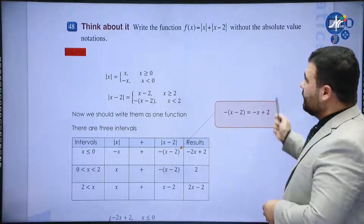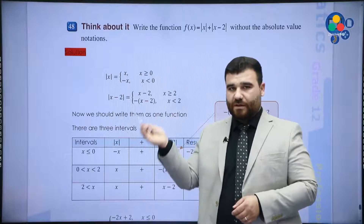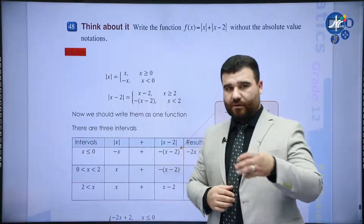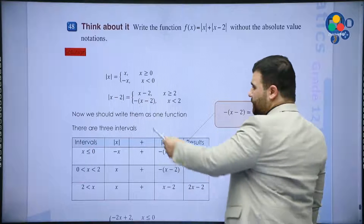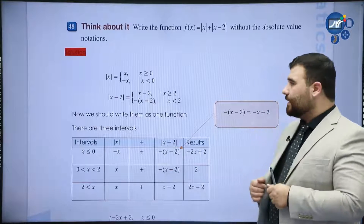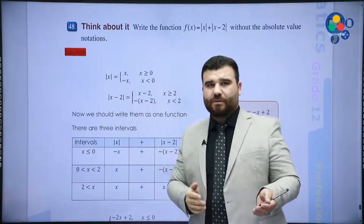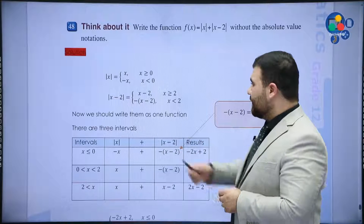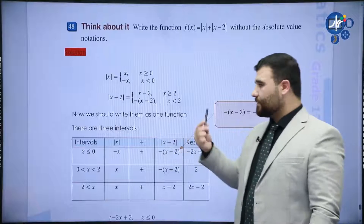Going back: instead of |x|, I write x when x ≥ 0 and -x when x < 0. For |x - 2|, the expression x - 2 equals itself without absolute value if x > 2, since subtracting 2 from a number ≥ 2 gives a positive result. For values less than 2 we give it an extra negative so the negative cancels and the result is always positive.